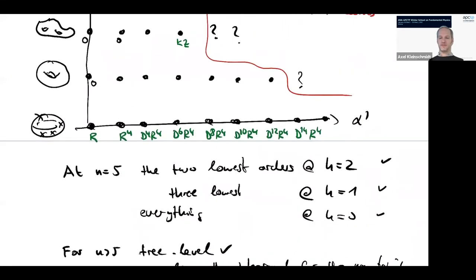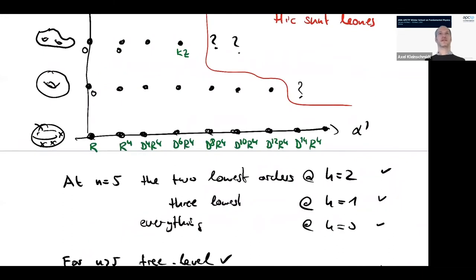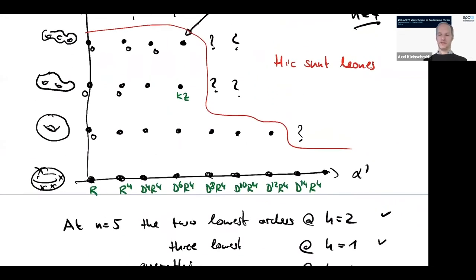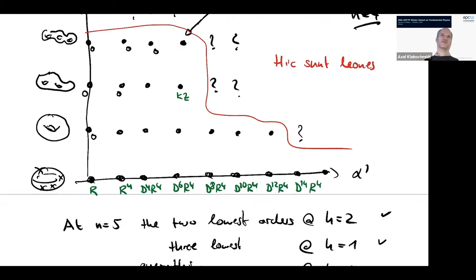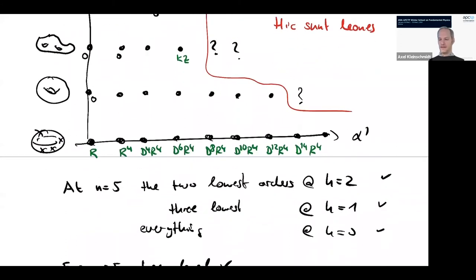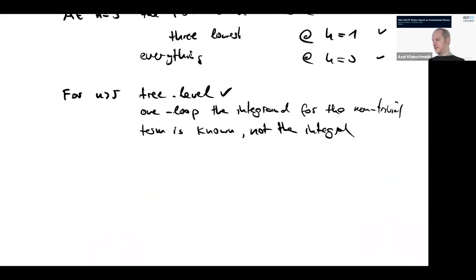There is interest in getting more data because, as we will see when talking about U-dualities, sometimes these points were predicted using dualities before they were computed. This provided a check on duality and on the string theory calculation. It's sometimes good to know more of these things because you can use them to test conjectures about string dualities.